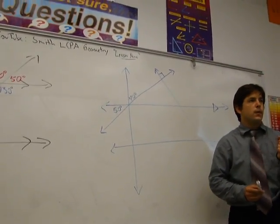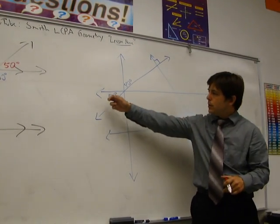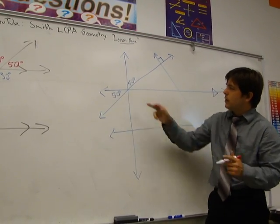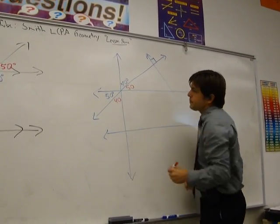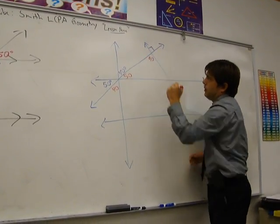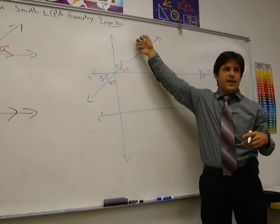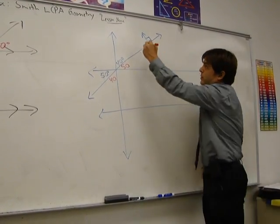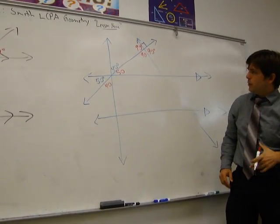But again, first thing I'm thinking, vertical angles and linear pairs. So here's a 50. That means the one directly across from it is also 50. This is a 40. So this one's also 40. Here's a 90. So this one's also 90. And then linear pairs say that two angles that form a straight line have to add up to 180. So if this is 90, this is also 90. And by vertical, this one's also 90. So we're getting really far really fast.